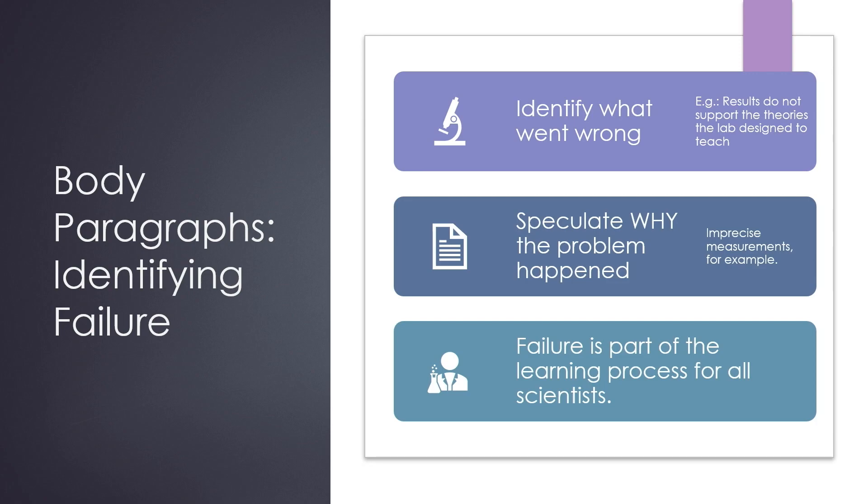Let's talk about identifying failure in your lab reports. It happens. If something goes haywire during your lab and the data does not support the theories, you can also discuss why that might have happened. First, you should identify what went wrong. For example, maybe the results do not support the theories the lab was designed to teach. Then you might speculate why the problem happened. For example, maybe you spilled while you were measuring a fluid, or maybe you learned you didn't measure as precisely as you should have. Important scientific work almost always includes a discussion of the shortcomings and failures of any given experiment, and it is okay, possibly even a good idea, to include a paragraph that records your own experiment's shortcomings and failures also.